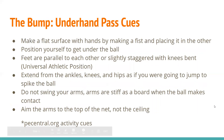Bump pass — underhand pass cues: make a flat surface with your hands by making a fist and placing it in the other, cupping your hands together with your thumbs on top. Your thumbs should not be interlaced — they should be parallel to each other, which is a common mistake. Position yourself to get under the ball with feet parallel or slightly staggered, knees bent in the universal athletic position. Extend from your ankles, knees, and hips as if you were going to jump to spike the ball. Do not allow your arms to swing — your arms should be stiff as a board when the ball makes contact, as overswinging sends the ball in all directions. Aim the arms toward the top of the net, not the ceiling, creating a curvilinear arc.